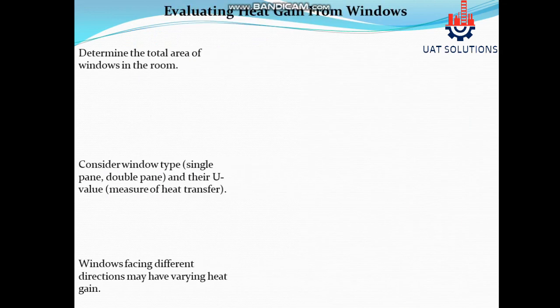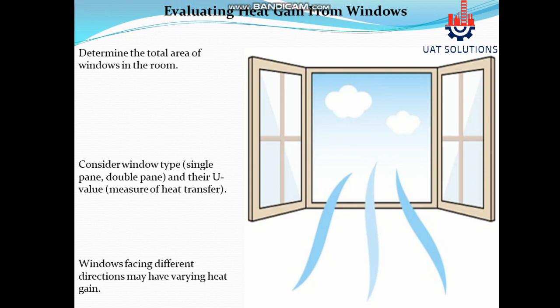Evaluating heat gain from windows: determine the total area of windows in the room. Consider the window type — single pane or double pane — and their U-value, which is a measure of heat transfer. Note that windows facing different directions may have varying heat gain.